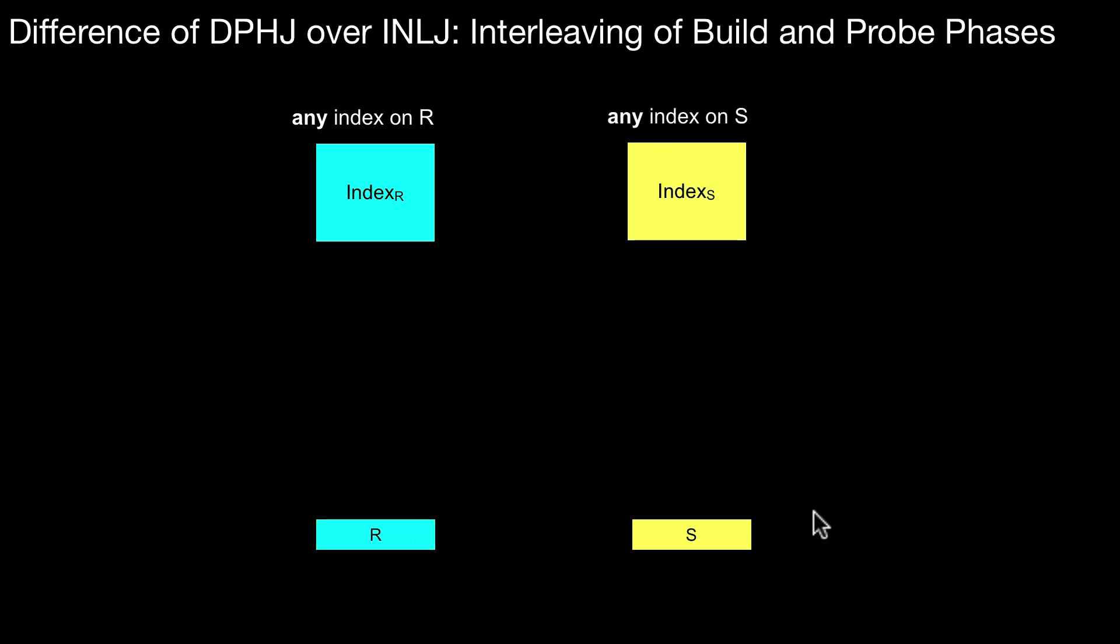The major difference of double pipeline hash join over index nested loop join - and this works for all kinds of indexes, no need to keep a hash table - is in the standard index nested loop join you have a clear separation of the build and the probe phases.